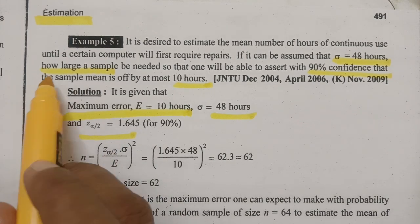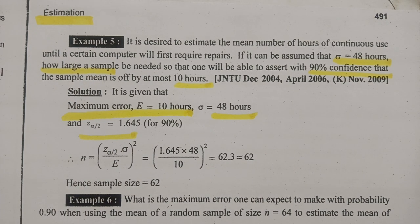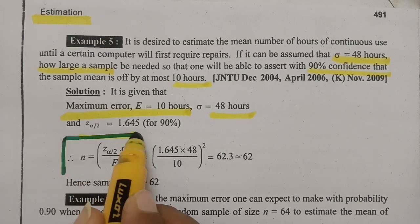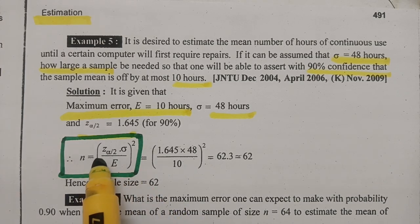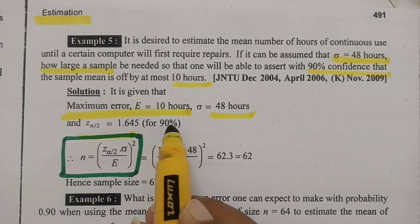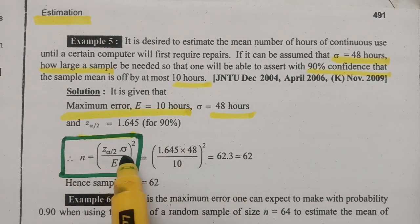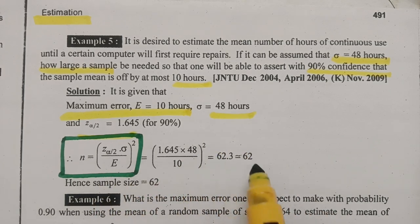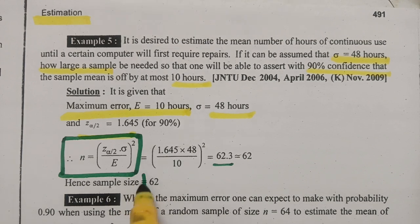Now we need to find the value of N. For finding the value of N, the formula is: N is equal to (Z alpha by 2 · sigma / E) whole square. Z alpha by 2 for 90% confidence is 1.645, sigma is equal to 48, and E — the maximum error — is equal to 10, whole square. Using the calculator, this is 62.3, which rounds up to 63. Hence the sample size is 62.